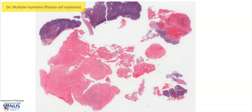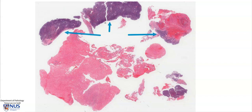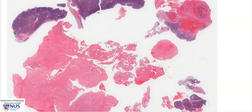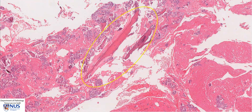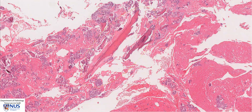We can see that there are a lot of very pink or red areas and some extremely intensely blue areas. These blue areas are where the neoplastic plasma cells are. But let's first look at the pink areas. We can see that there are some fragments of pre-existing bony trabeculae, because this sample is a curettage from the vertebral body.